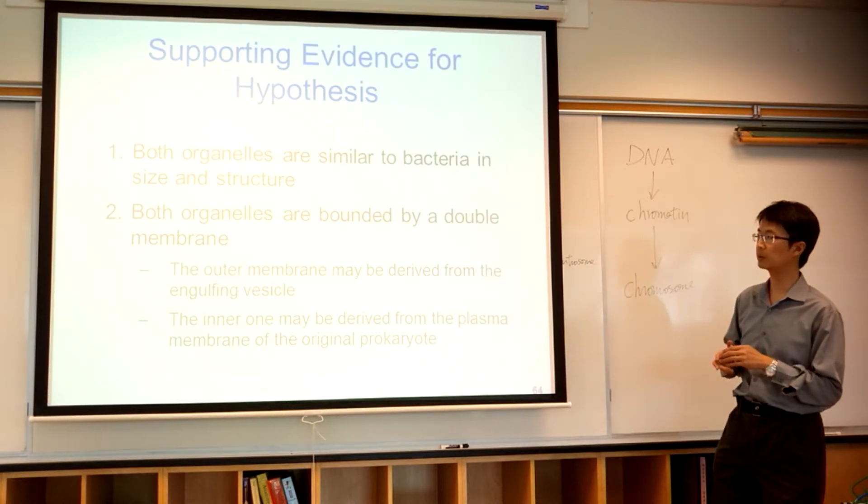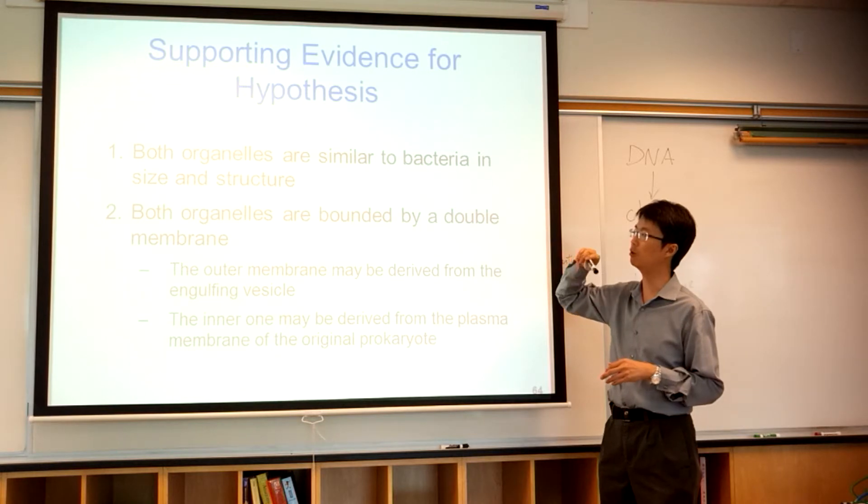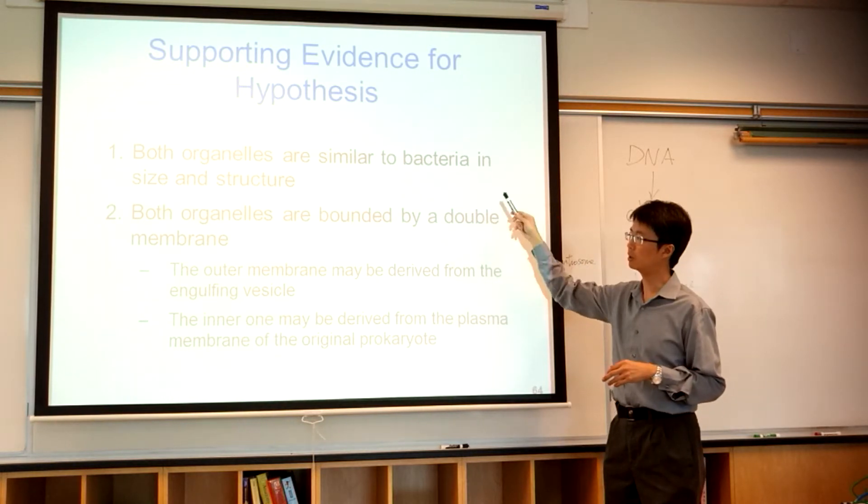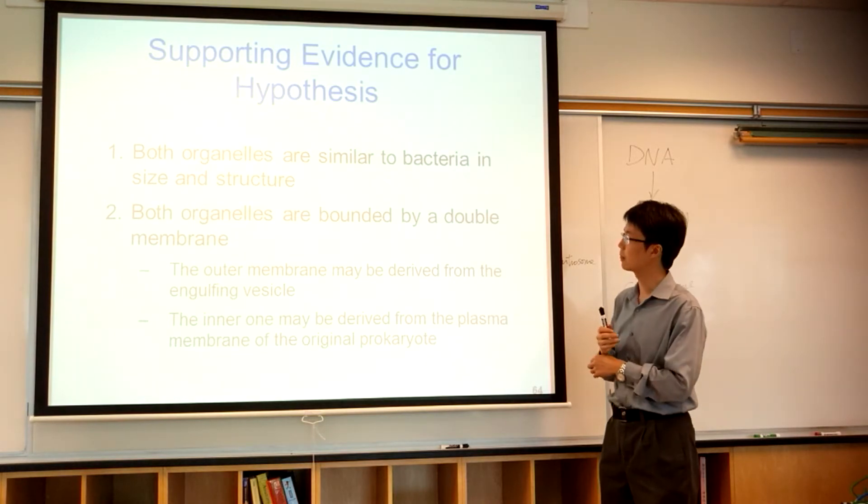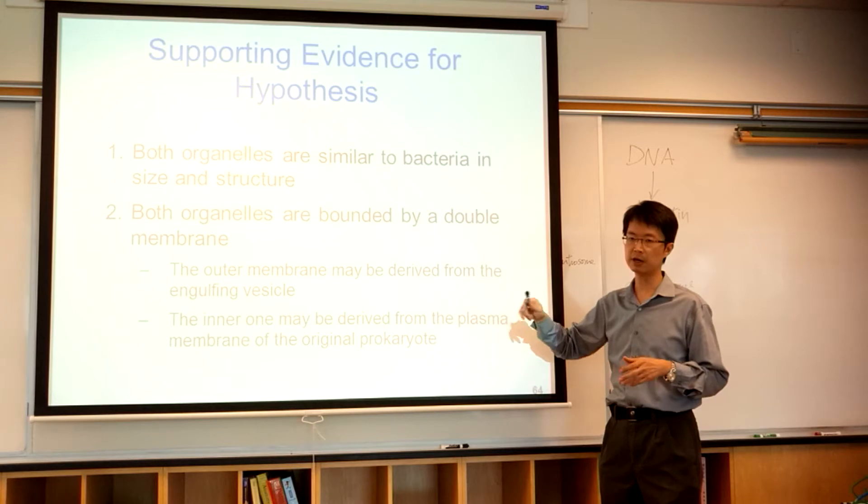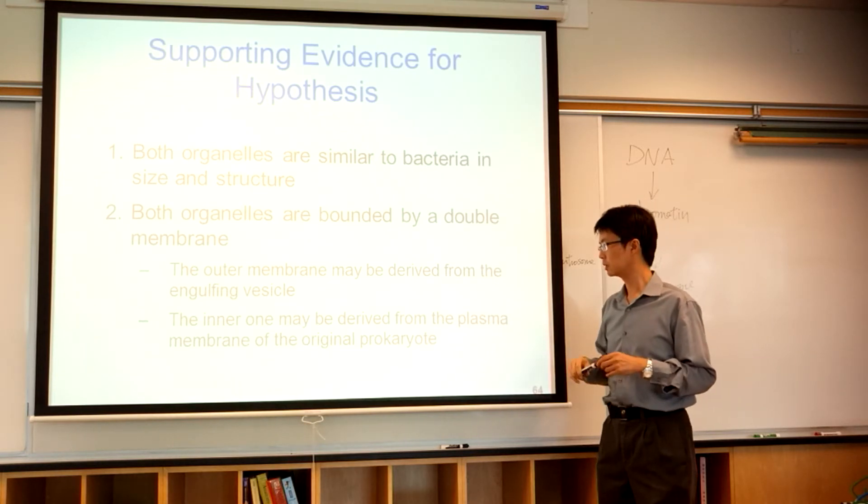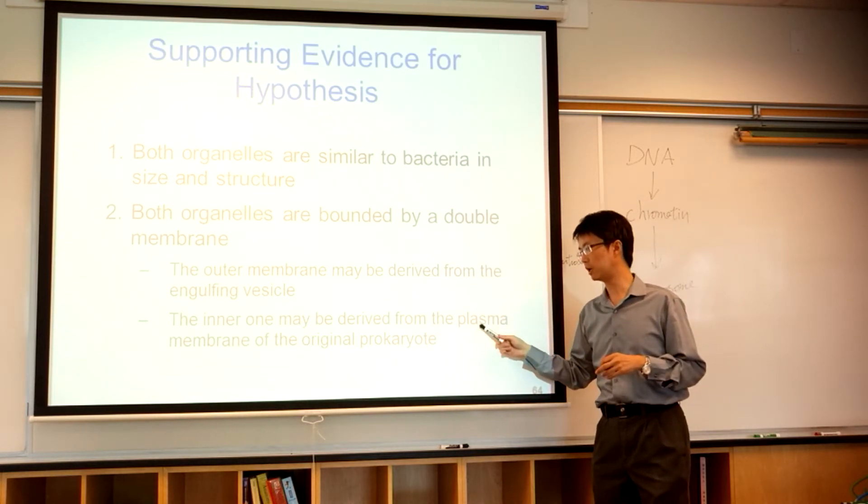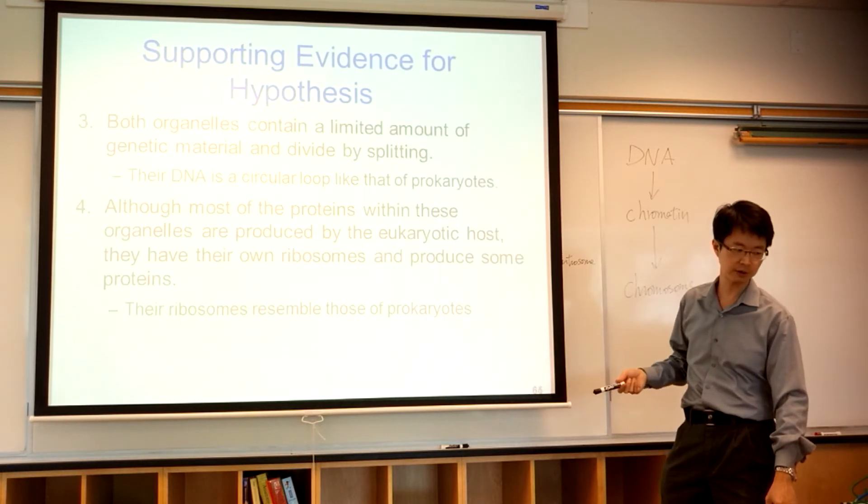So, what supports this hypothesis? They are similar to bacteria, meaning that both chloroplasts and mitochondria are like bacteria in terms of size and structure. They both have double membrane. We believe that the outer membrane of the chloroplasts and mitochondria, they are originally from the engulfing vesicles. The inner membrane is the original plasma membrane of the prokaryote.